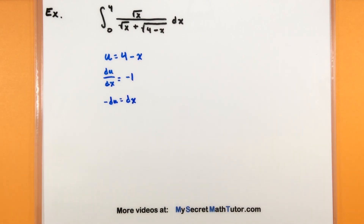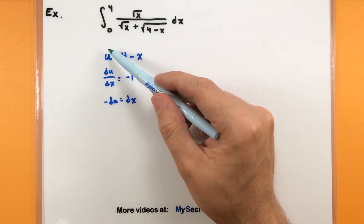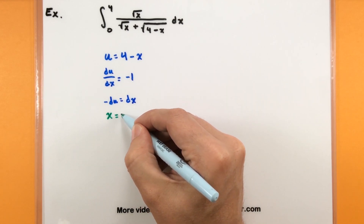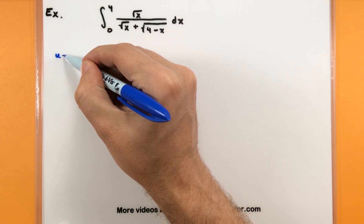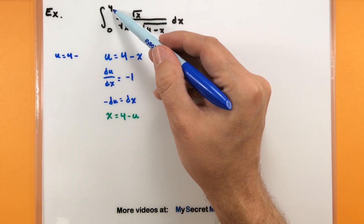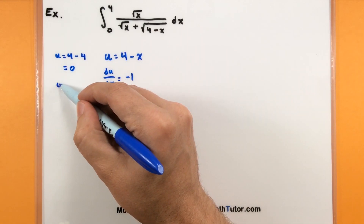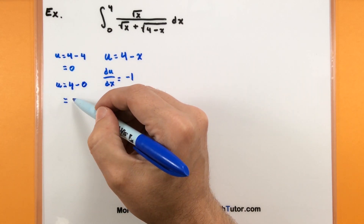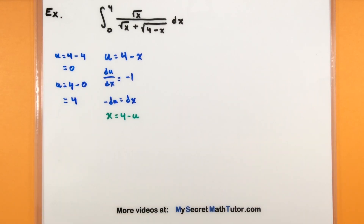The 4 minus x piece is going to become our u. But in order to swap out these x's, we also want to solve this equation for x — add x to one side, subtract u, and this gives us x equals 4 minus u. These are definite integrals, which means we want to swap out our bounds as well. When x equals 4, our new u bound is 4 minus 4, which is 0. When x equals 0, u equals 4 minus 0, so the bottom bound will now be 4.